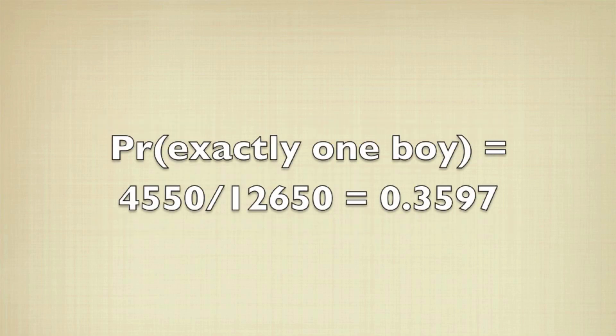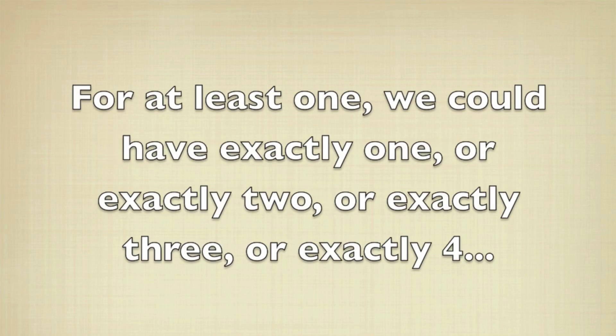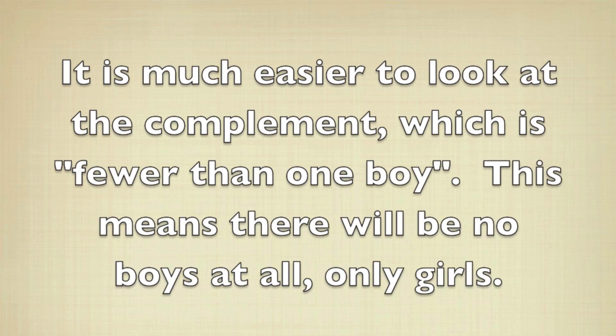To find out how many groups have at least one boy, we could have exactly one, or exactly two, or exactly three, or exactly four, and in all these cases we would have to compute a separate probability. It's going to be much easier to look at the complement. The complement of at least one would be fewer than one, which means we want no boys at all and only girls.